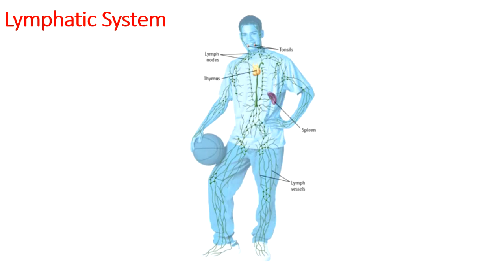Moving on to the lymphatic system — have you ever had a cold and found it painful to swallow? This can happen if your tonsils swell. Tonsils are small organs on both sides of your throat and are part of the lymphatic system. The spleen, thymus, bone marrow, and lymph nodes are also part of the lymphatic system. The spleen stores blood for use in an emergency, and the thymus, spleen, and bone marrow make white blood cells.